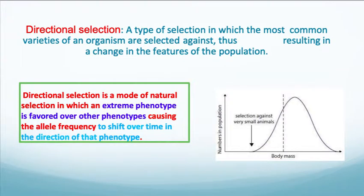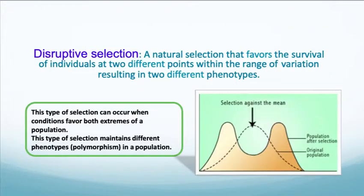Directional selection is a type of selection in which the most common varieties of an organism are selected against, thus resulting in a change in the features of that population. It is a mode of natural selection in which an extreme phenotype is favored over others, causing the allele frequency to shift over time in the direction of that phenotype. That would be like if there was a sudden change in the environment where white became the more adaptive allele.